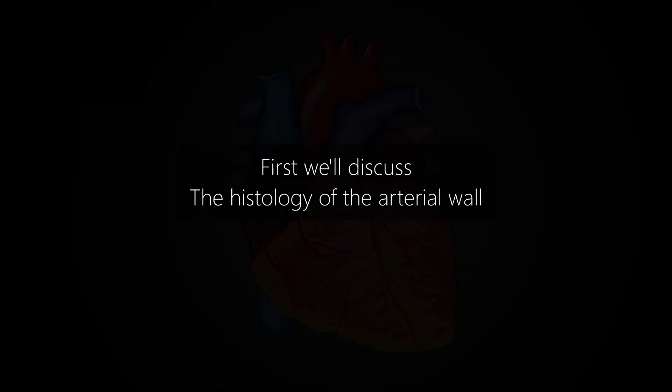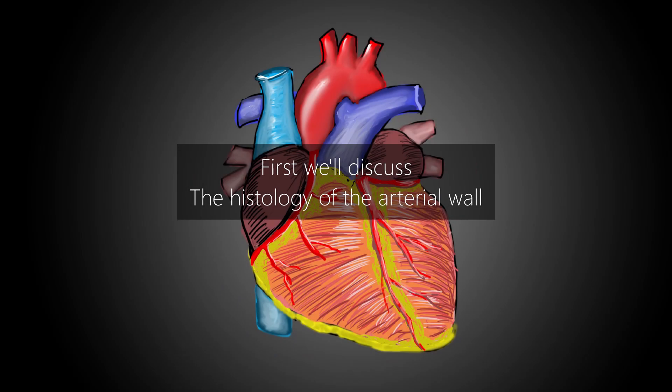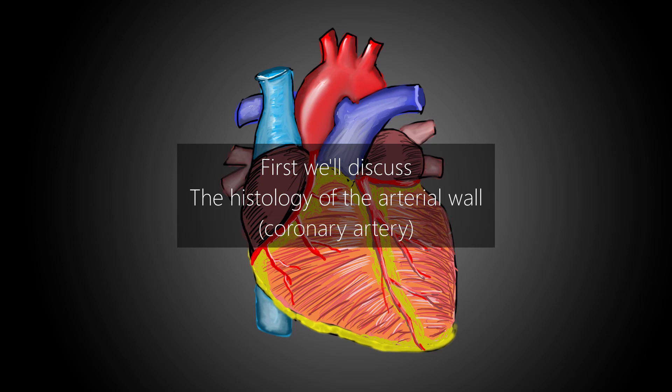In this video we will discuss pathogenesis of atherosclerosis. For understanding the pathogenesis, it is important to know about the histology of the artery. As we are concerned about atherosclerosis, we will explain the histology of coronary artery, which is a medium-sized muscular artery.